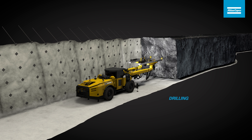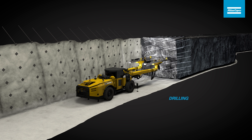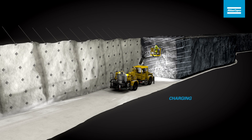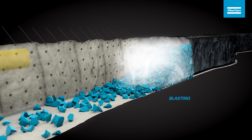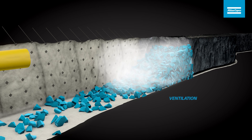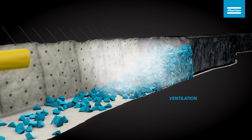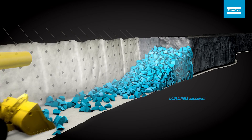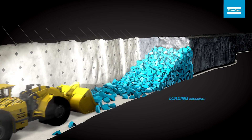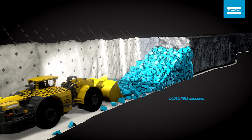To mine the ore in one of the slices, we first need to drill blast holes. The next steps are charging and blasting the ore, and then ventilating the toxic blast fumes. The ore is then mucked out and dumped into an ore pass or onto a truck.